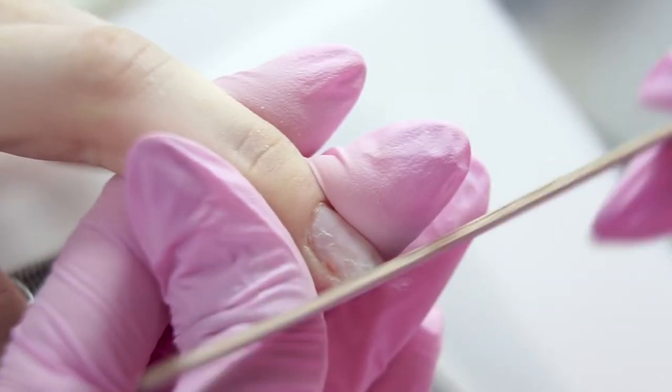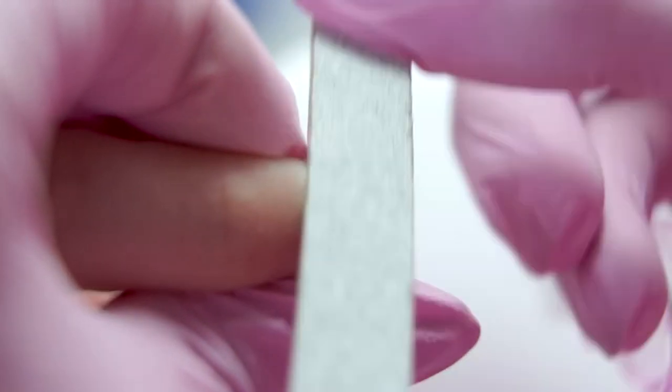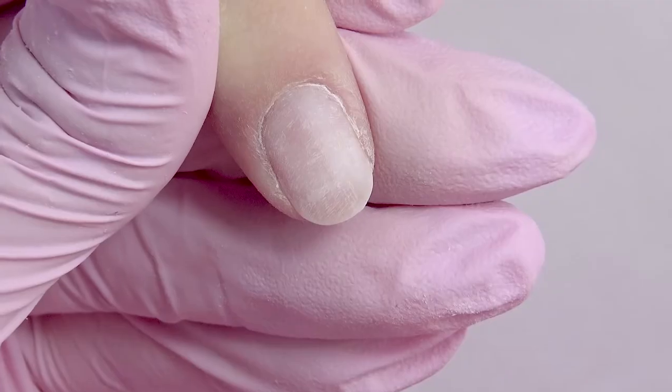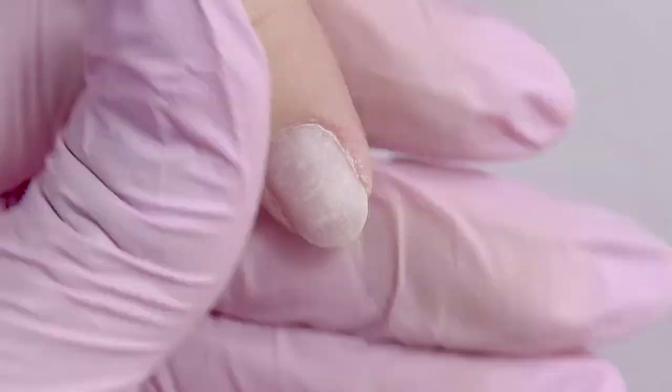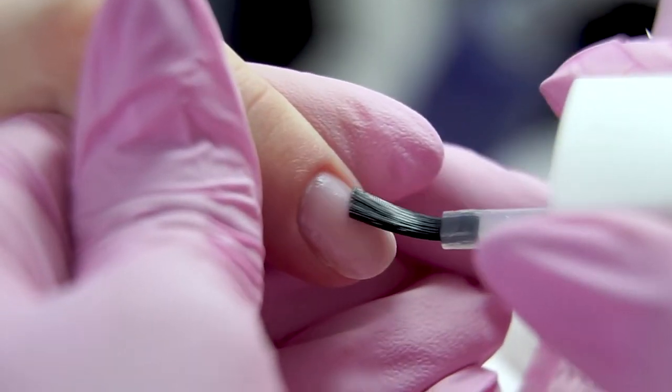Process the nail with a soft 180-240 grit file. I don't use a buffer. In order to raise the scales of the nail plate and have a better bonding, use adhesive products. A dehydrator that dries the nail plate and a primer that acts as a double-sided tape. It will improve the bonding.